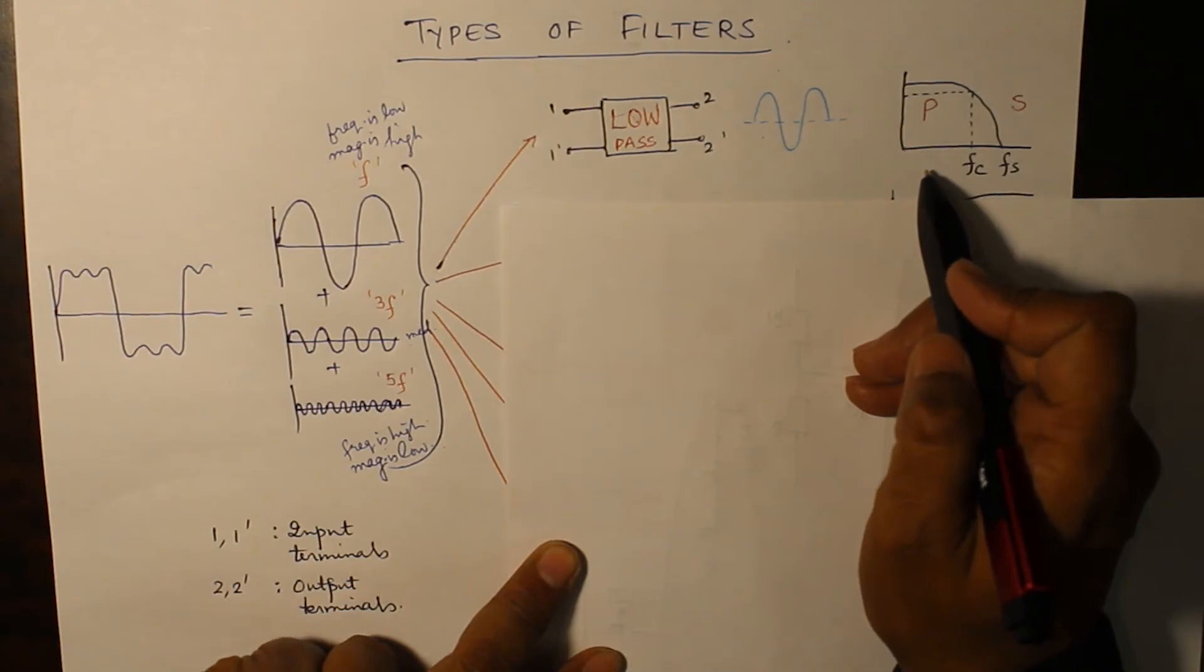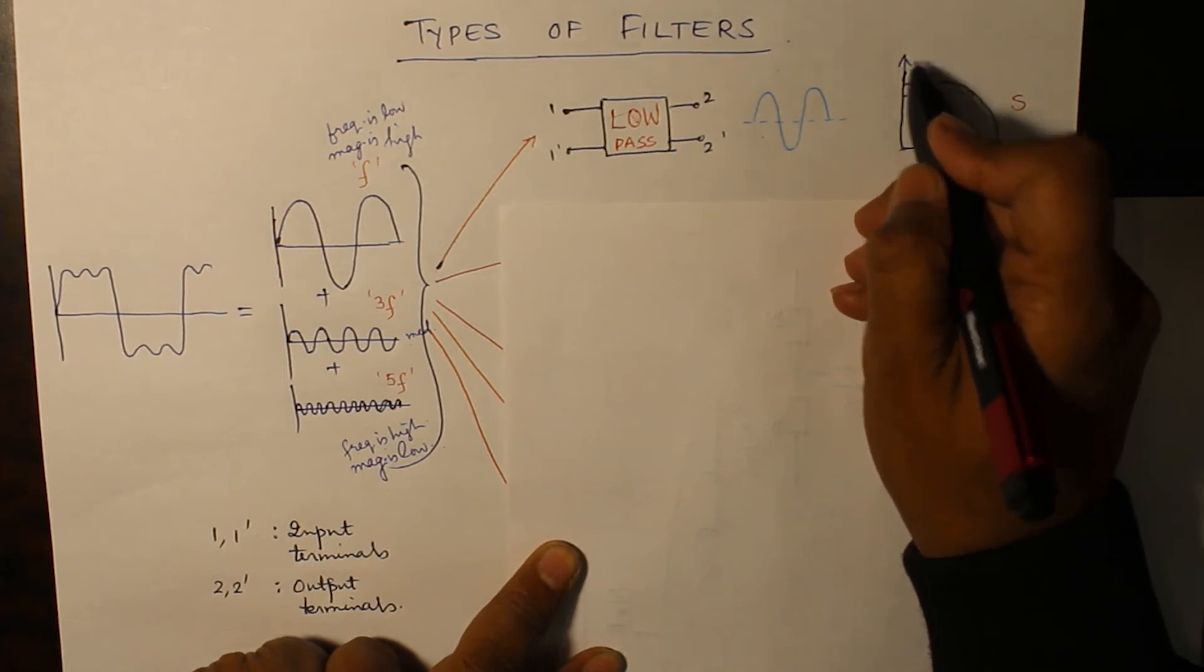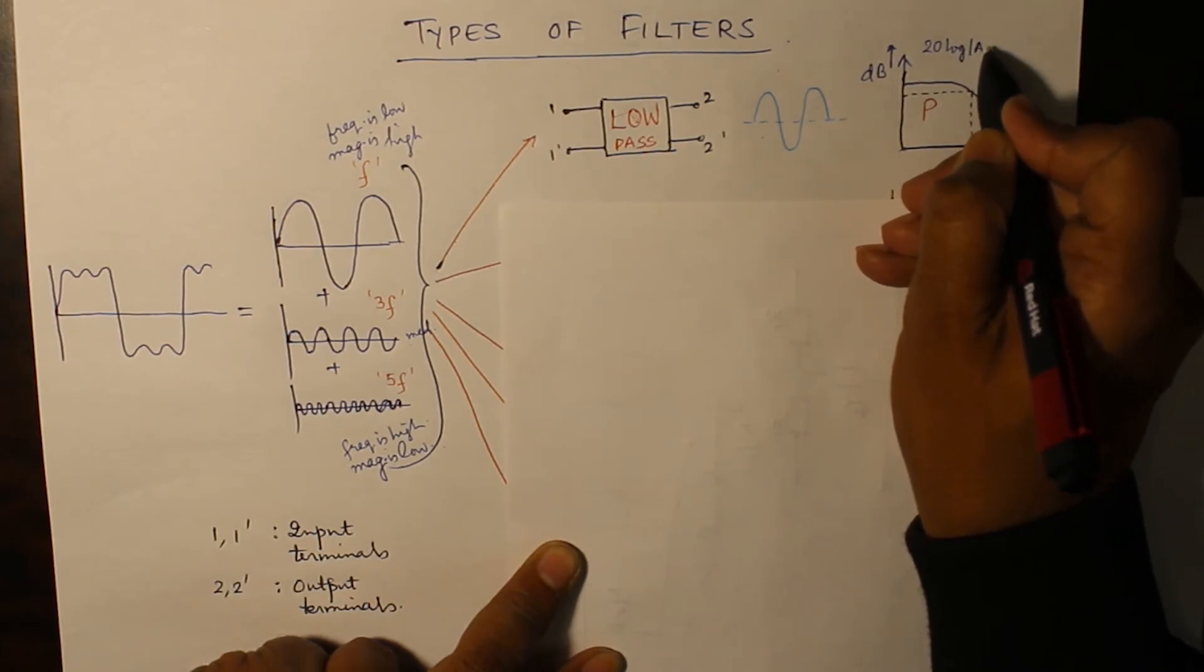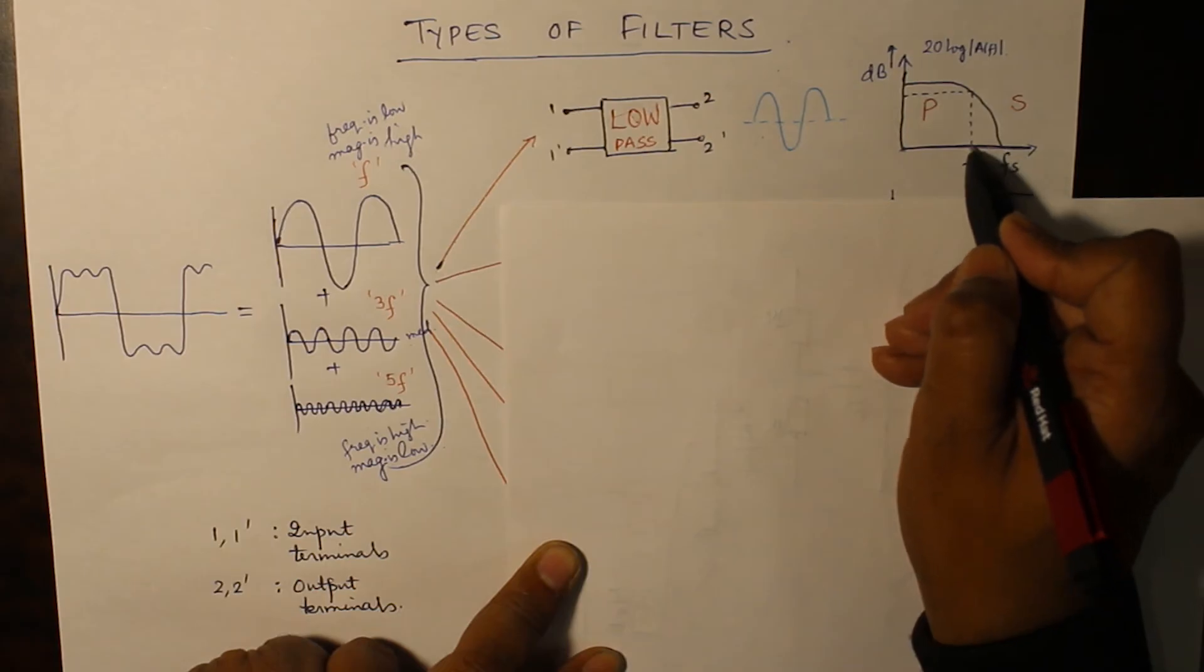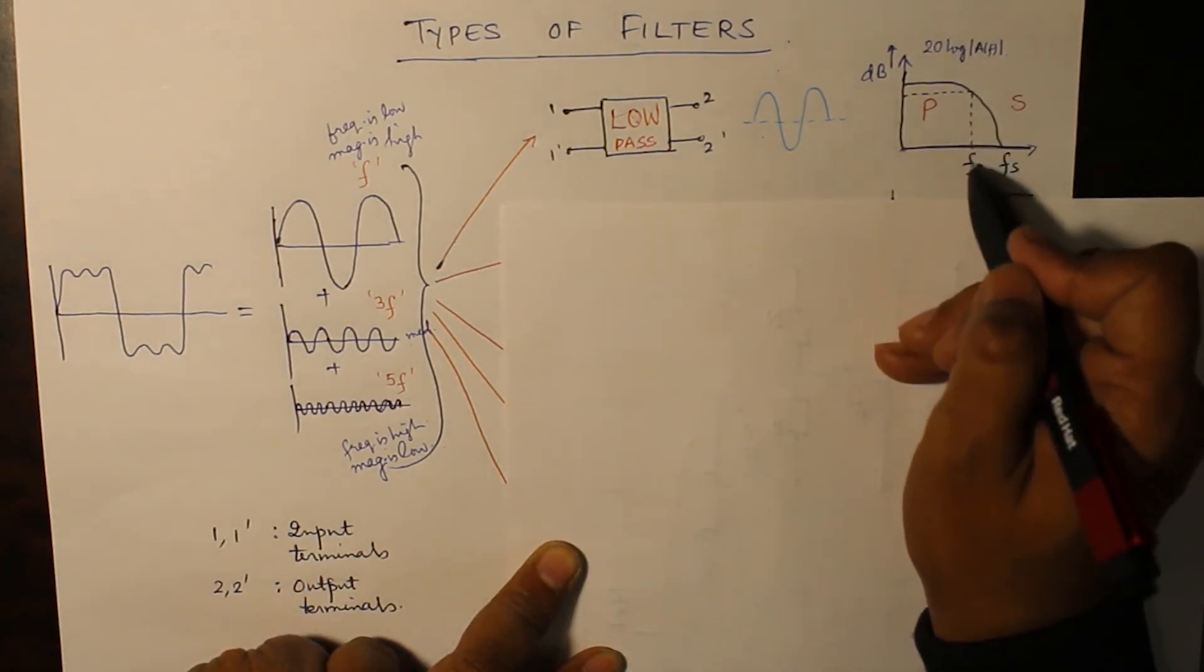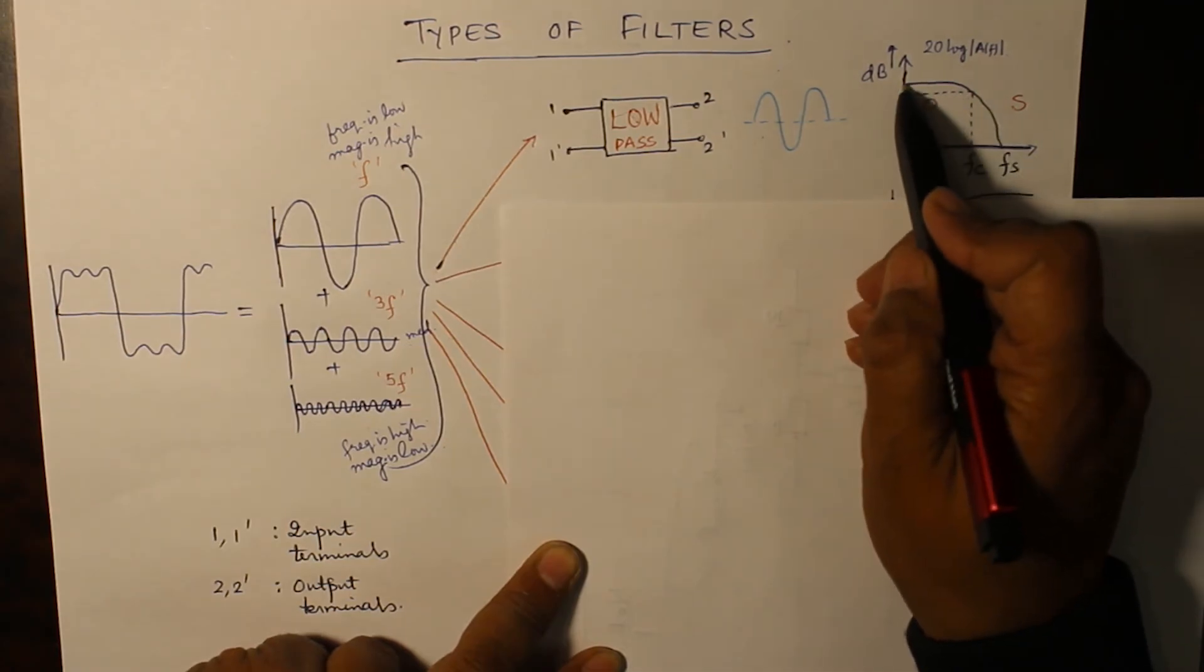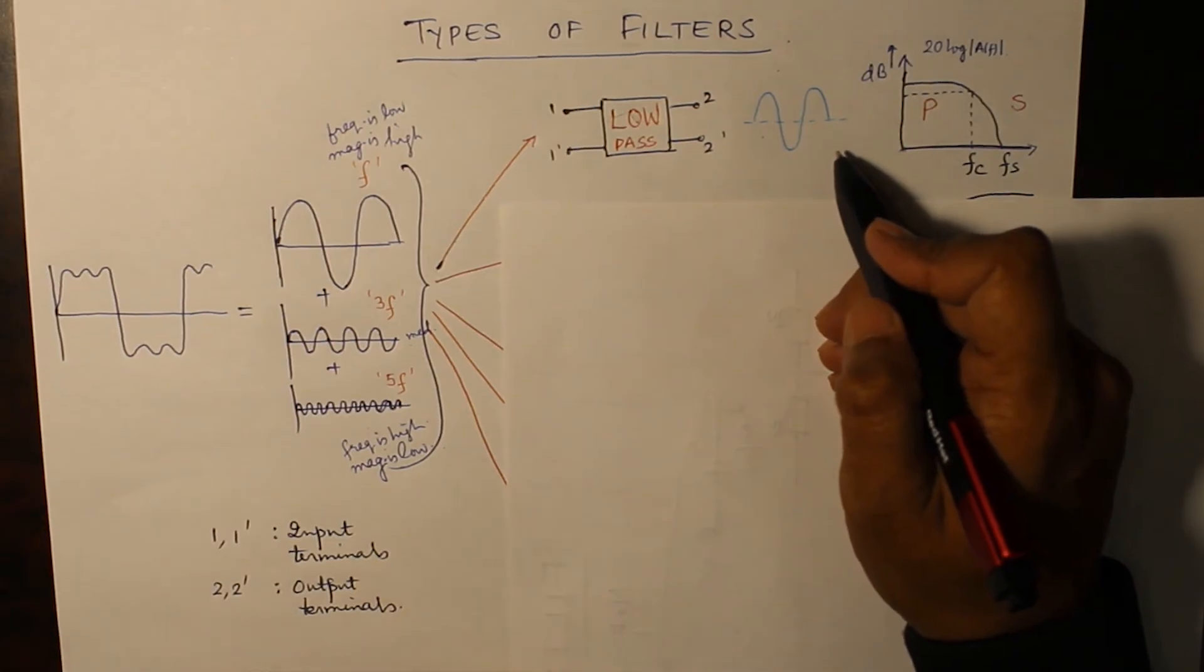Whatever is the waveform here the same appears in the output. For which the frequency response, here we are having frequency on the x-axis and we are having the amplitude in decibels in the y-axis. This is the pass band from 0 to fc the cutoff frequency, then this is the stop band after fs, and in between fc and fs it is gradually decreasing. This is a practical filter frequency response.